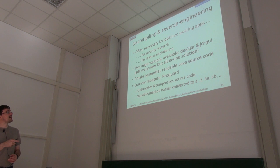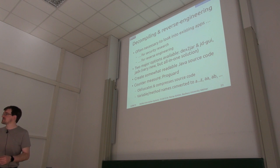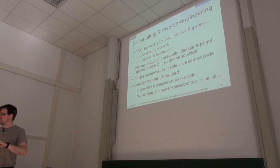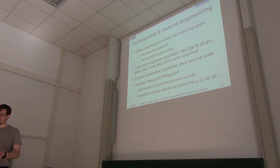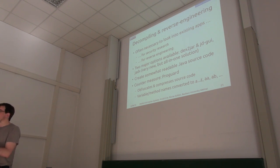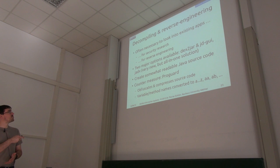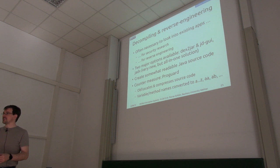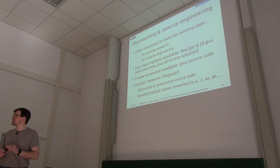One is called DEX to JAR in combination with JDGUI. As the name already says, this takes the DEX optimized source code and converts it back to a regular JAR. Then with JDGUI you can get a rough conversion back from the JAR to Java source code. There's also the relatively new JADX, which is basically an all-in-one solution — you put in an APK and then you can start browsing the source code in Java.